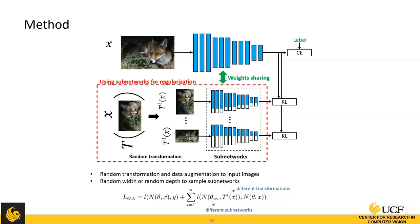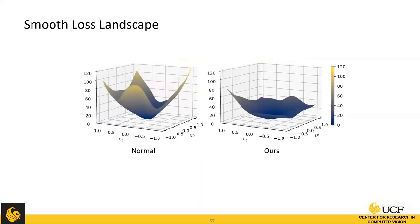Theoretically, we can reason about adversarial robustness from the loss landscape perspective. With adversarial attack, you perturb the input and don't want the network output to change much — which is reflected by a smoother loss landscape. Since our training procedure via sub-network sampling ensures a flatter loss landscape, this provides robustness to adversarial perturbations.